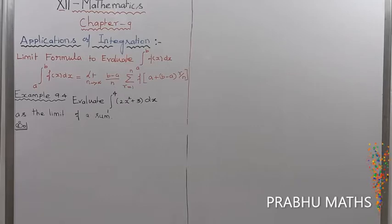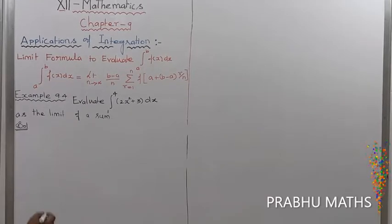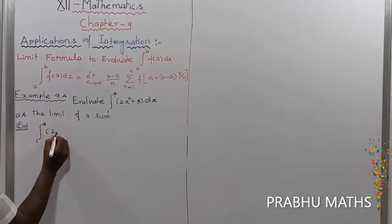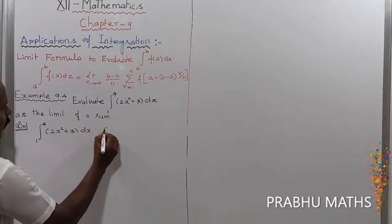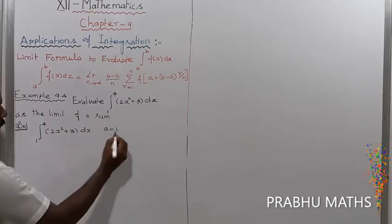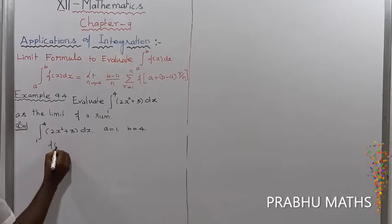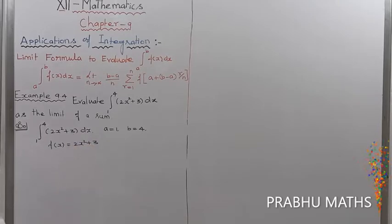Example 9.4: Evaluate the integral from 1 to 4 of (2x² + 3) dx as a limit of a sum. The given integral is ∫₁⁴ (2x² + 3) dx. Here a equals 1, that is the lower limit; b equals 4, that is the upper limit. Next, f(x) is equal to 2x² + 3.